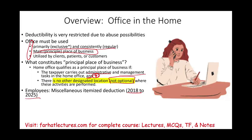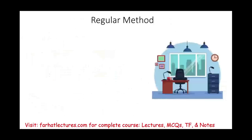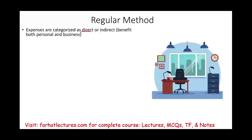To determine how much to deduct, you can use one of two methods: the regular method, also called the actual expense method, or the simplified method, also called the safe harbor method. Under the regular method, expenses are categorized as direct or indirect. Direct expenses relate specifically to the office space; indirect expenses benefit both business and personal use.